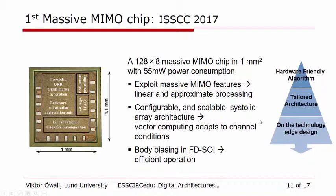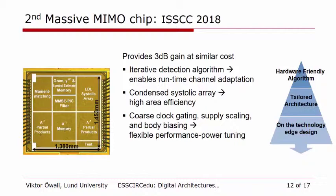This is our second Massive MIMO chip, done together with University of Michigan and presented at ISSCC this year. It provides 3 dB gain at similar cost. It has an iterative decoding algorithm which enables runtime channel adaptation. It has a more condensed, efficient systolic array with higher efficiency, and we have introduced coarse clock gating, supply scaling, and again body biasing to be able to tune our performance. Those are two examples.